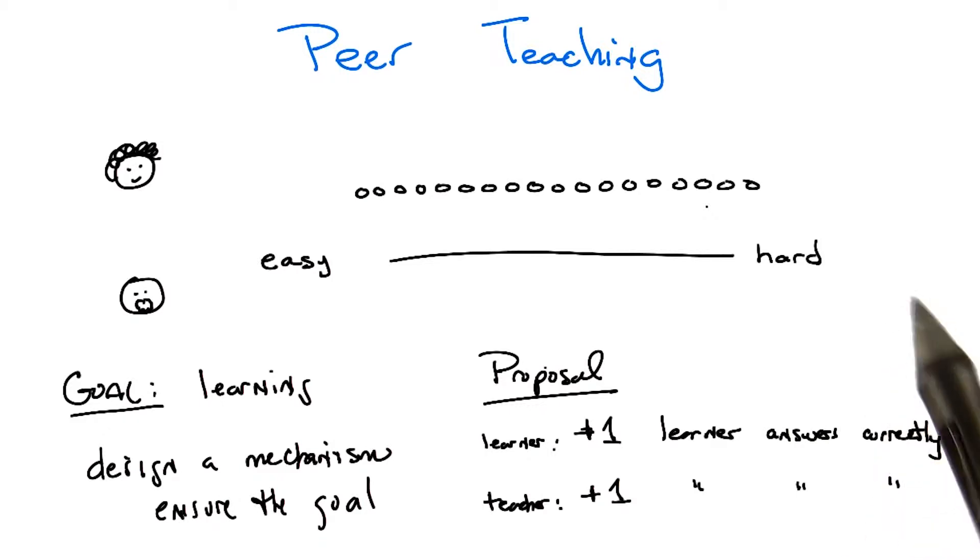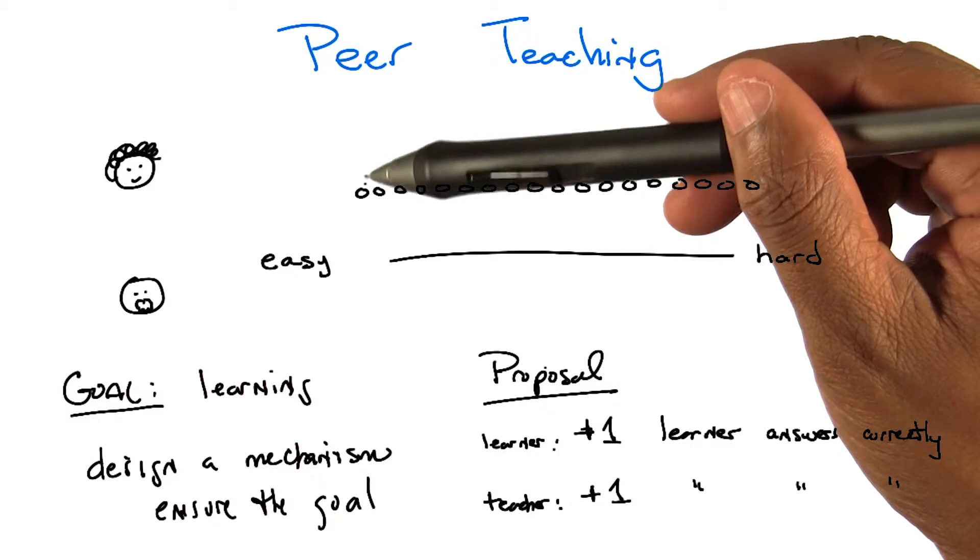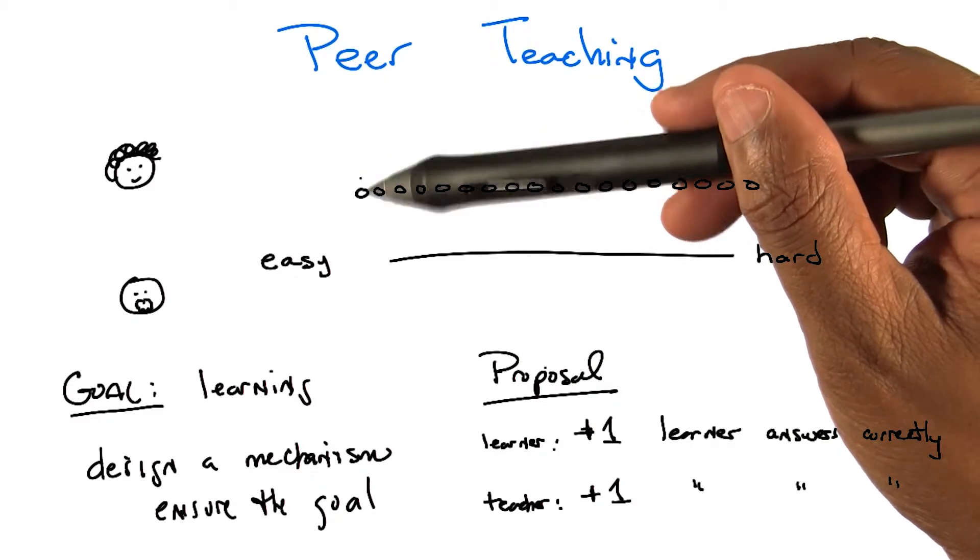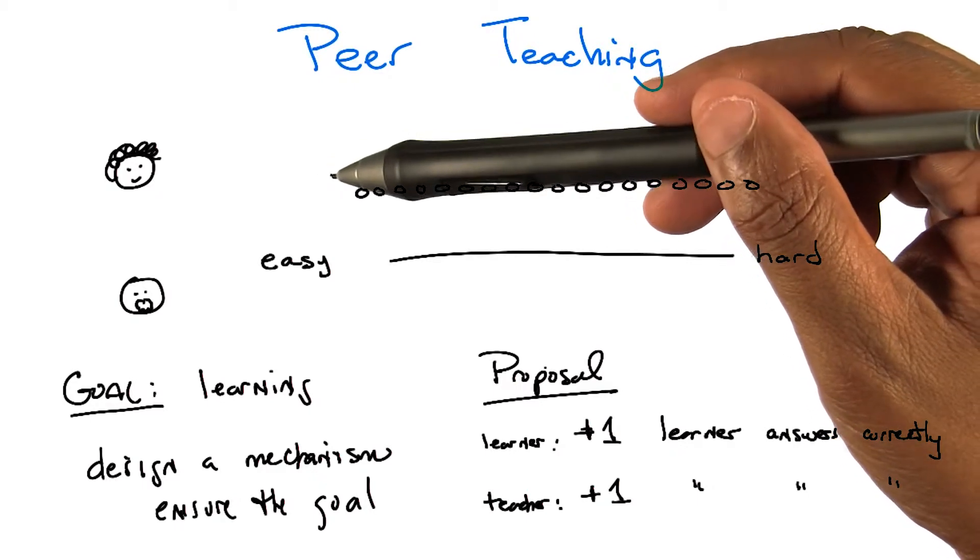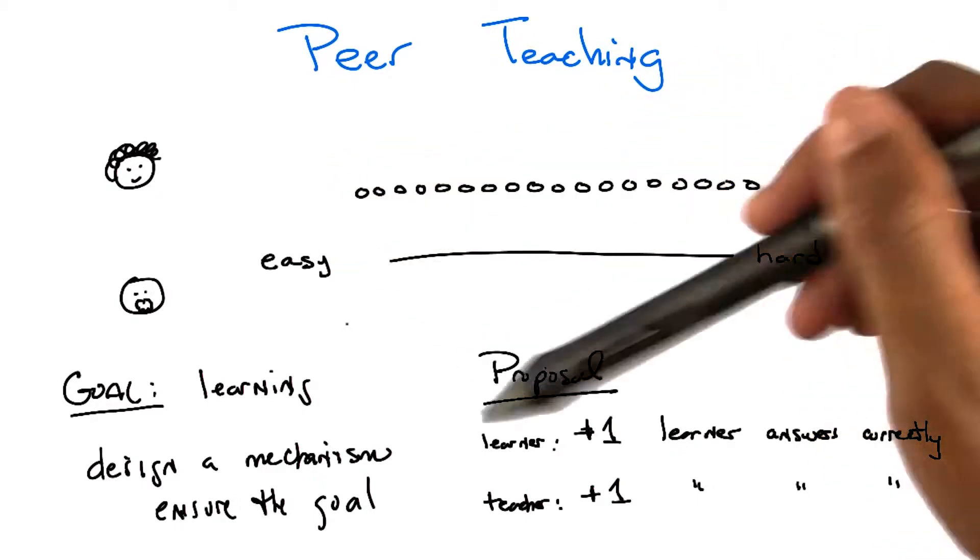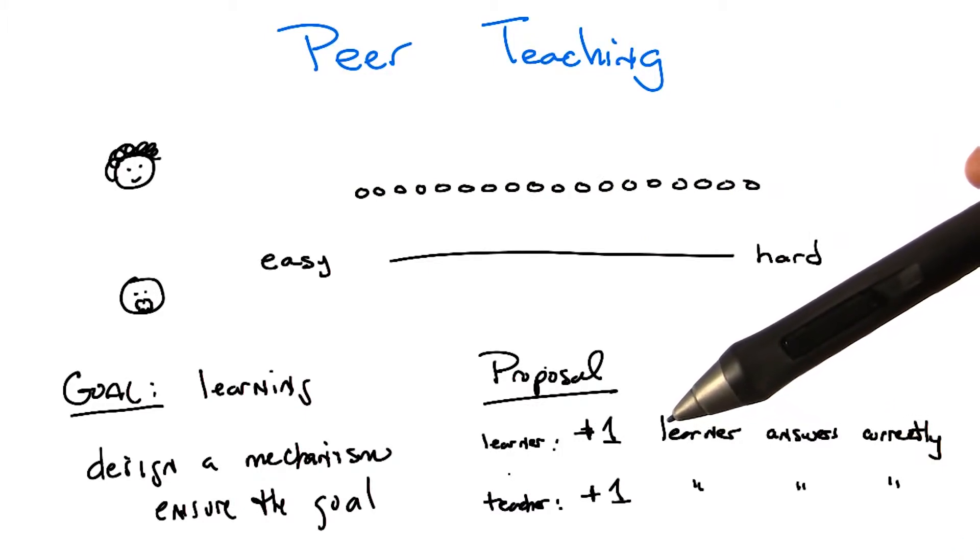If you ask easy questions, then the learner wins and the teacher wins. That's exactly right, I think. So hopefully that makes sense. If questions way down here are so easy that anybody can get them right, then if I ask questions down here, the learner will get them right. So that's good for the learner. But also because the learner will get them right, that's good for the teacher.